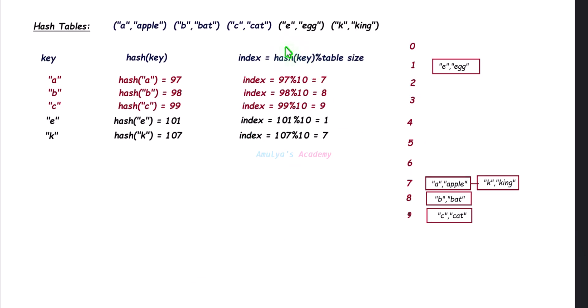Here we have an example. If I want to find key K — for 'king' — the given key is K. Find its index, which is 7, go to that index and check whether that slot is empty or not. It is not empty, then search through the linked list for that key. The key is found, so return its value: 'king.'